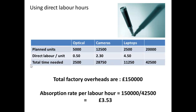Let's look at direct labour hours. For the optical items, we have 5,000 planned units and a labour figure of 0.50 hours per unit. Multiplying 5,000 by 0.50 gives a total time of 2,500 hours. Doing the same for cameras and laptops gives a combined total of 42,500 hours. If my total factory overheads are £150,000, the absorption rate per labour hour is £150,000 divided by 42,500, giving £3.53 per labour hour.